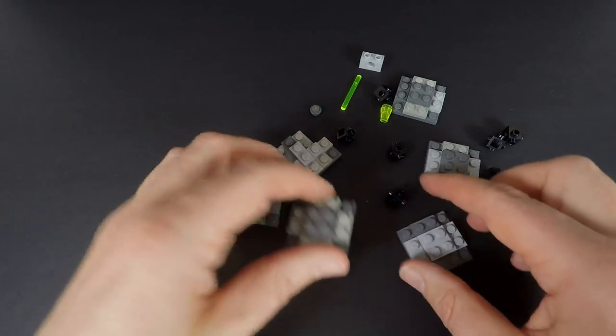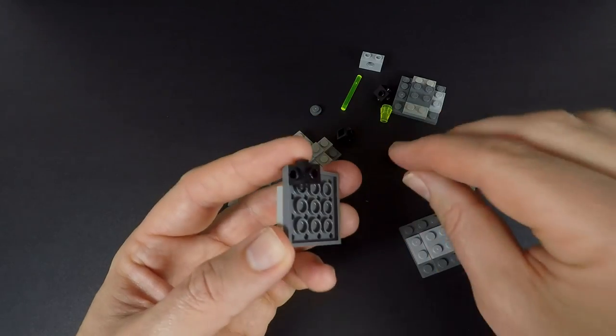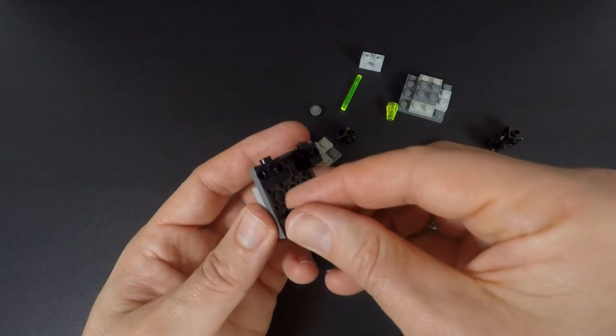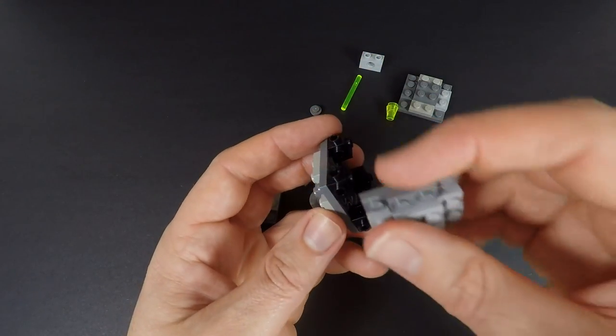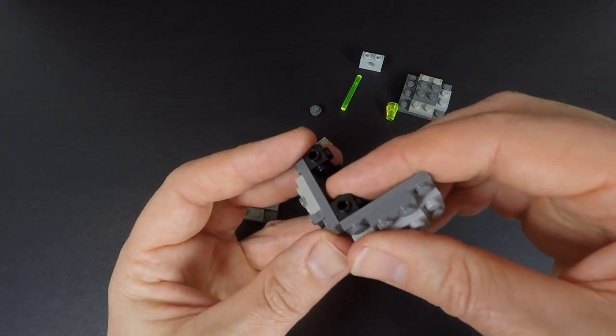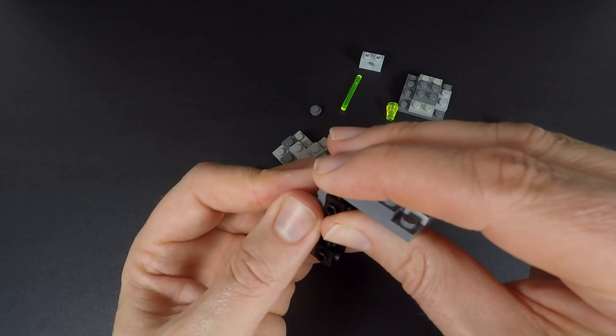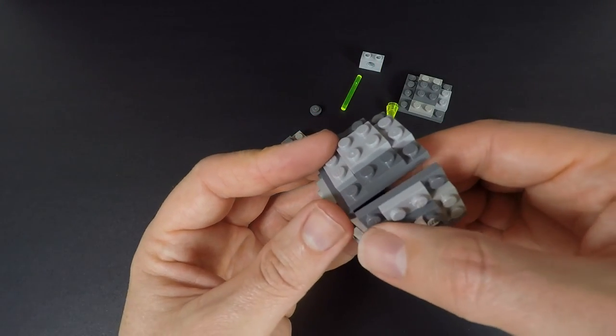Now we've got our six sides. Let's put it all together. We're using these Travis bricks here and we're going to pop those into the ends. That's the setup. You want to make sure that they're nice and flush and that way they should just snap in. That's that side. We'll do this side now.